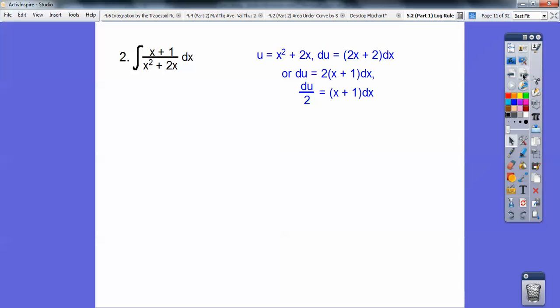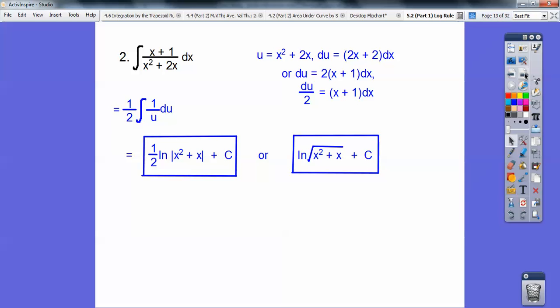On this one, let u be the denominator. Differentiate and it looks like I can pull a 2 out, so this 1 half is going to come out. It gives me 1 half the integral of 1 over u du. There's your natural log. You can put the 1 half up into the exponent so it's to the 1 half power or the square root. Easy enough.